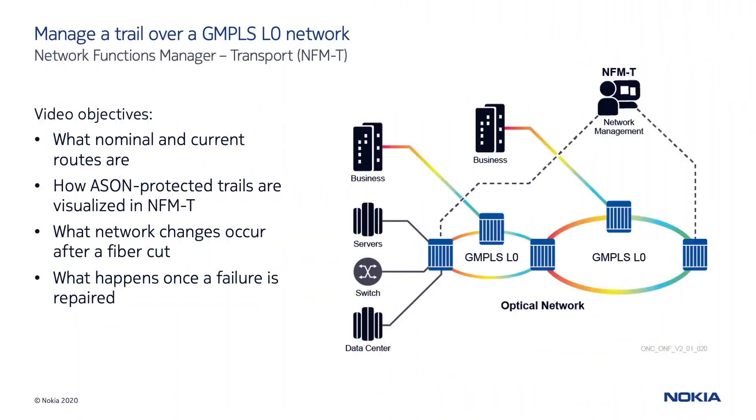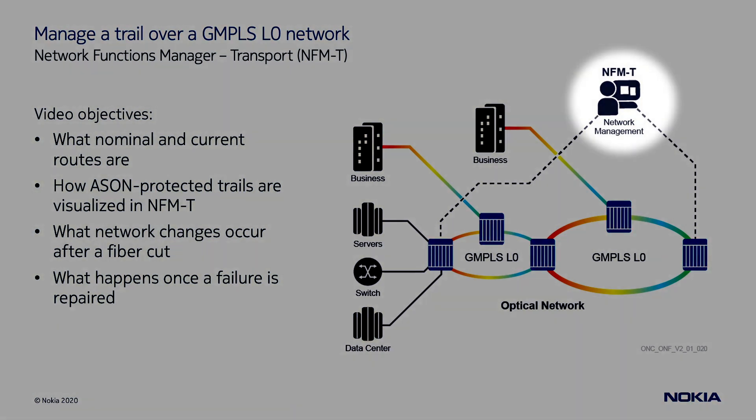In this video, I'll show how to use NFMT, the Nokia Optical Network Management System, to visualize a source-based restoration or SBR trail deployed over a GMPLS L0 control plane-enabled network. Nominal and current routes will be explained, as well as their visualization on the tool. Then, a failure scenario is illustrated, demonstrating what happens to the transported traffic after a failure is recovered.